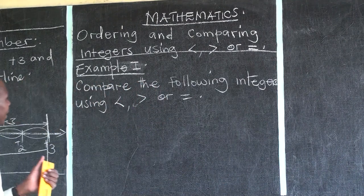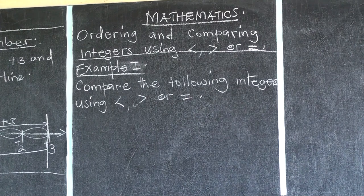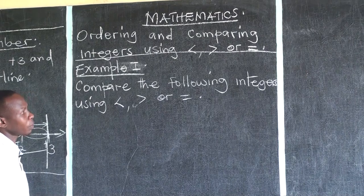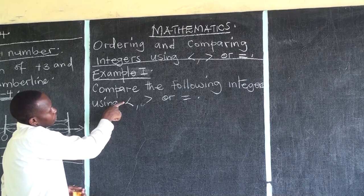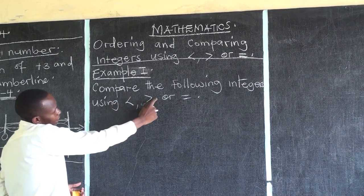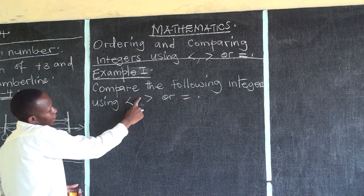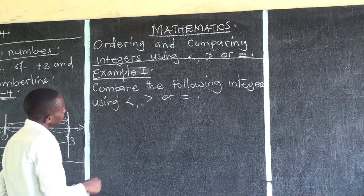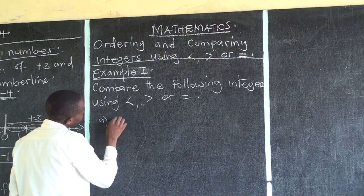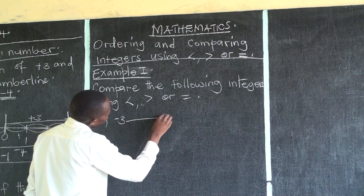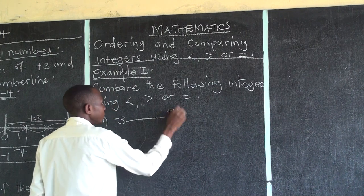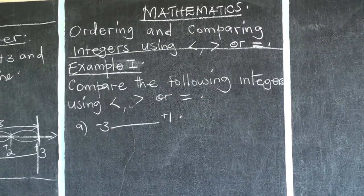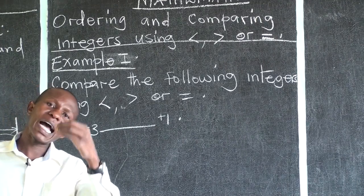Now let's look at the first example. I was explaining the signs: less than, greater than, or equal to. You open the sign to the biggest number or the biggest quantity. In example one, we have negative three, and we are comparing it with positive one.